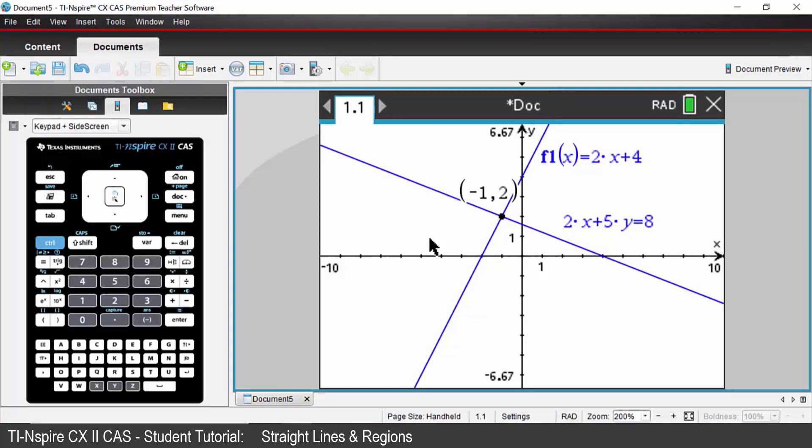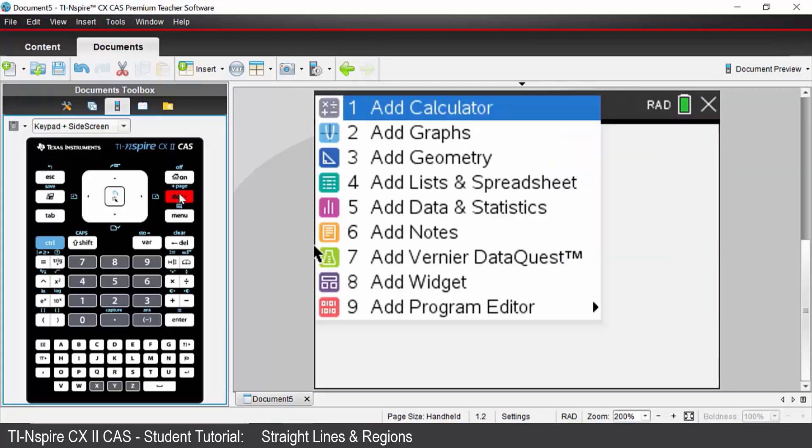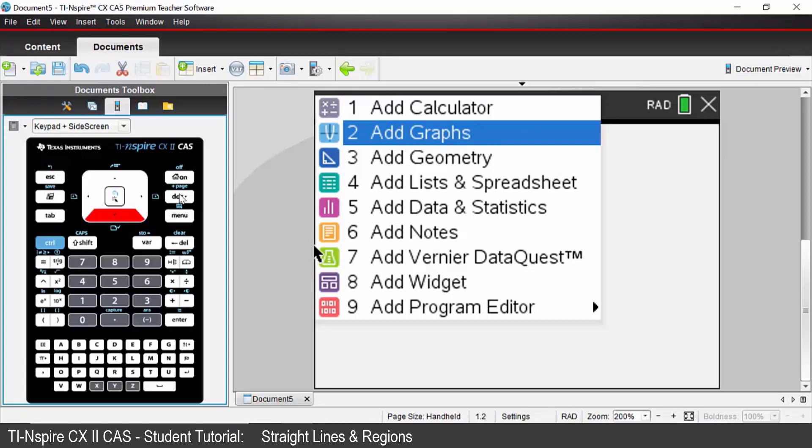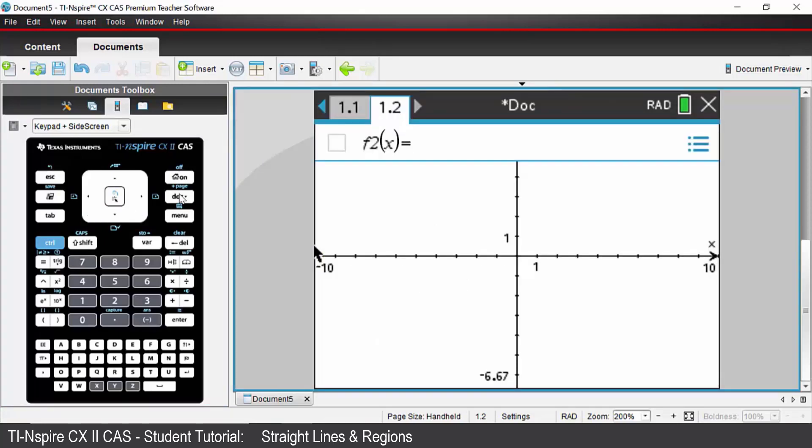Let's insert a new page, and to do that we will go control and then add page which is above the dot key. We're going to come down and add in a new graphs application. We are going to graph a horizontal line, and we're going to graph y equals 4 or f2x equals 4. Press enter and you've got your horizontal line.